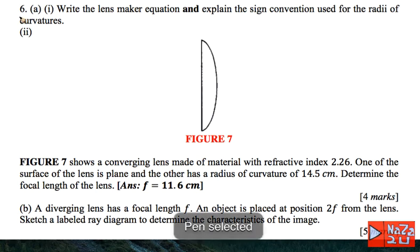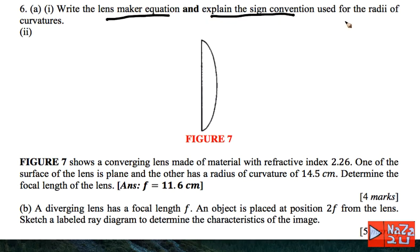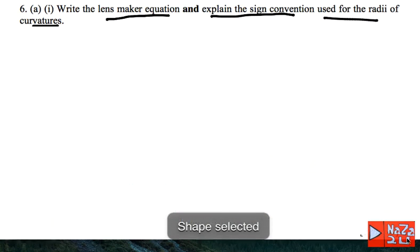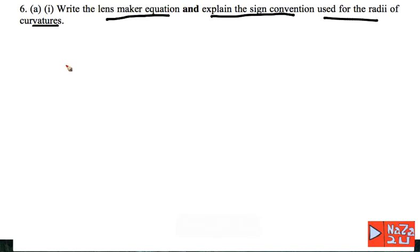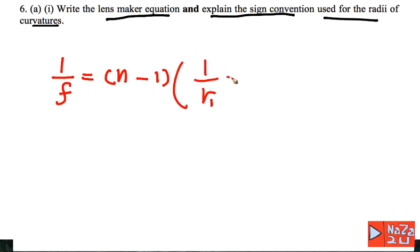Question number six: what is the lens maker equation and explain the sign convention used for radius of curvature? The lens maker equation is: 1 over f equals n minus 1 times the quantity 1 over R1 minus 1 over R2.